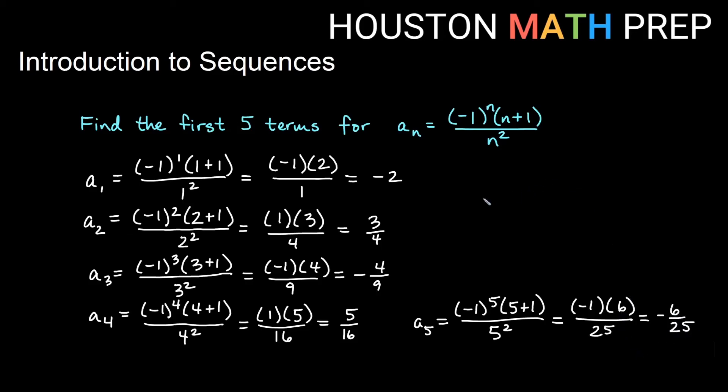So if we wanted to just write the collection of the first five terms, remember we use our braces, our curly brackets, and list them in order. We would say the first term negative 2, the second term 3 fourths, the third term would be negative 4 over 9, a4 is 5 over 16, and a5 is negative 6 over 25.